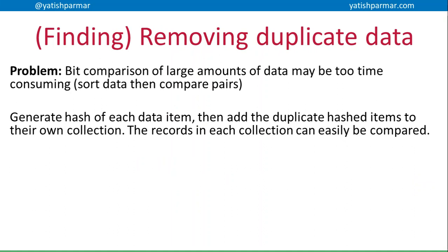Another example — this is a new one — is removing duplicate data. Imagine you've got a bunch of files or records and you want to remove duplicate data stored in the file. You could sort all of that data and then compare pairs, but a bit-by-bit comparison of all of that data might be too time-consuming. It's far quicker to generate a hash of each data item. Any time you get a duplicate hash, you store it in a collection. Then you examine each of those collections that have duplicates to see whether they are really duplicates or not, and get rid of all the ones you don't need anymore.